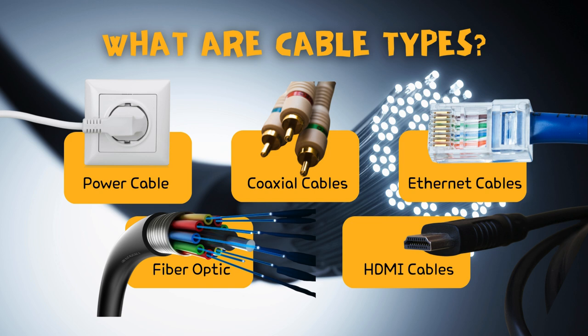2. Coaxial cables. Coaxial cables are widely used for transmitting high-frequency signals, particularly in television and internet connections. These cables consist of multiple layers, including a central conductor, insulation, and outer metallic shielding. The design of coaxial cables allows for efficient transmission with minimal signal loss or interference. They are commonly used for cable television, satellite communications, and internet connections.